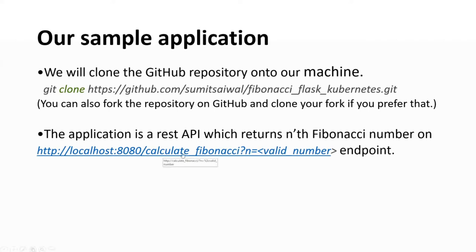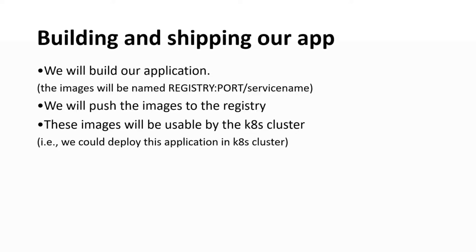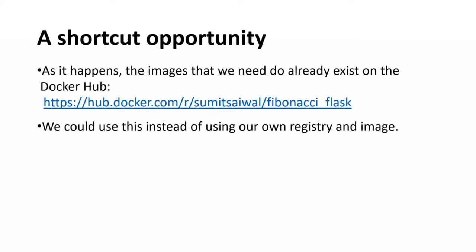This app has an API running at slash calculate underscore Fibonacci. If you pass a valid number, it returns the corresponding number from the Fibonacci series. We'll deploy this app in Kubernetes today. As I said, you clone the app or use your own, build it, push it to a registry like Docker Hub, and then the image is usable by the cluster.